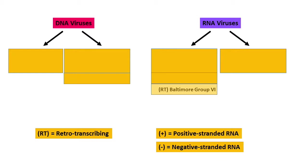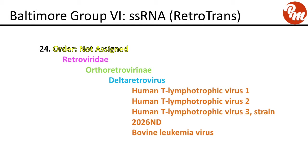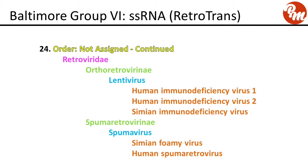Finally, Baltimore Group 6 — RNA retrotranscribing viruses. Order not assigned, family Retroviridae, subfamily orthoretrovirinae, genus deltaretrovirus. This includes human T-lymphotropic virus 1, 2, and 3, strain 2026-ND, and bovine leukemia virus. In the same family, genus lentivirus includes human immunodeficiency virus 1 and 2 (HIV), and simian immunodeficiency virus. Subfamily spumaretrovirinae, genus spumavirus, includes simian foamy virus and human spumaretrovirus.